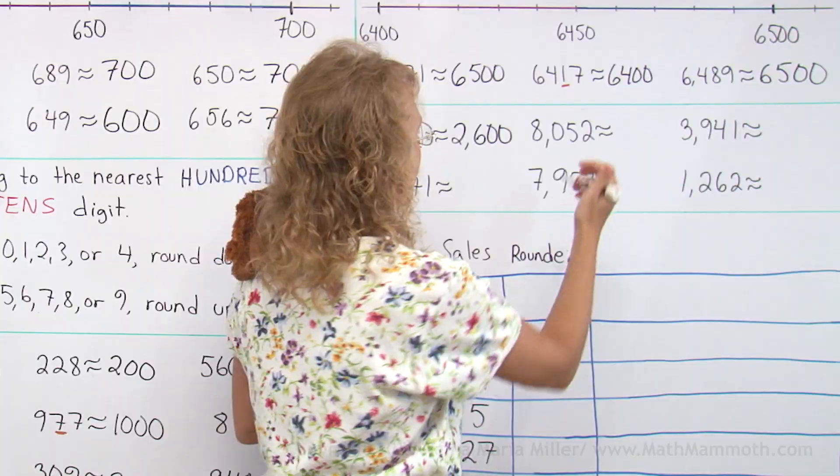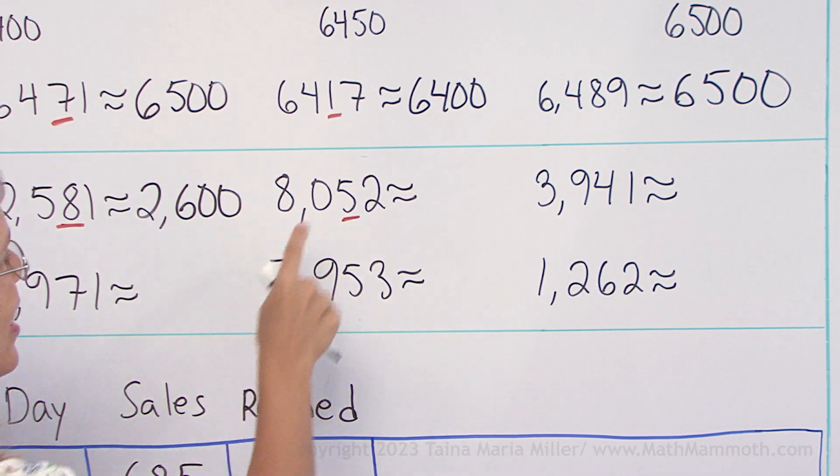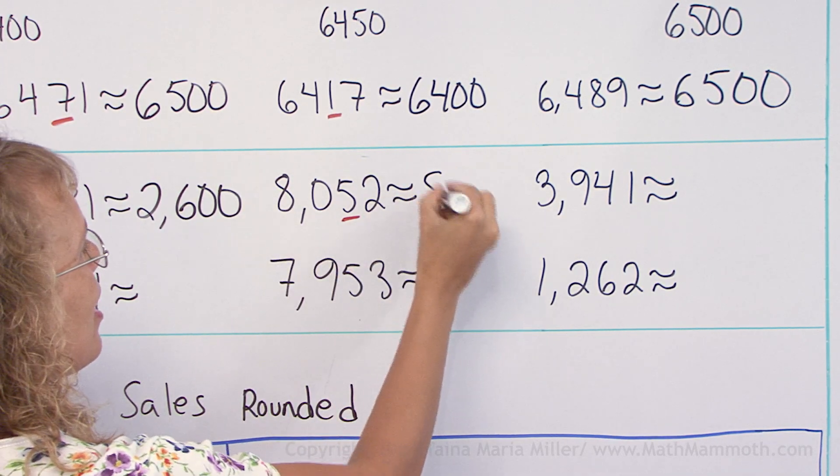8052. Again, round up. And the next hundred coming up is 8100.